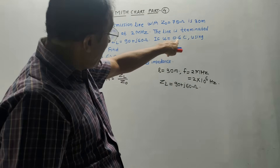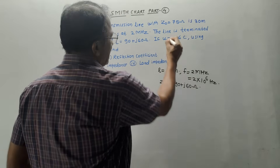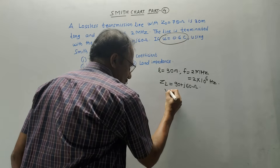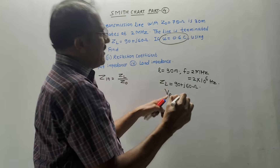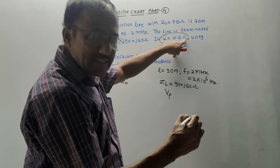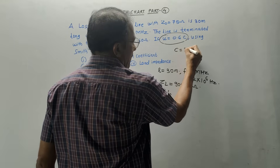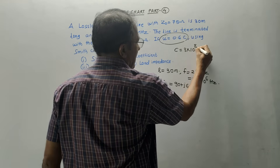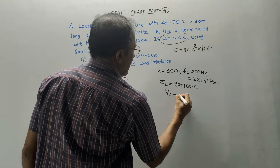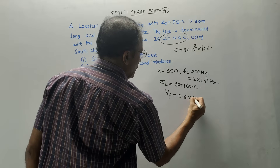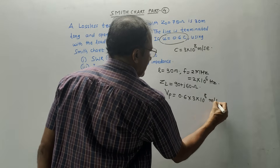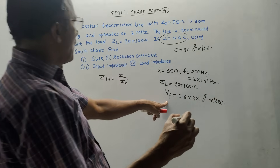If U is 0.6C — this U is the same as the velocity of propagation, Vp, which is 0.6 times C. C is the speed of light, with value 3×10⁸ meters per second. So Vp will be equal to 0.6 into 3×10⁸ meters per second. This is the velocity of propagation.